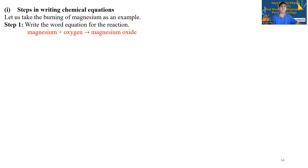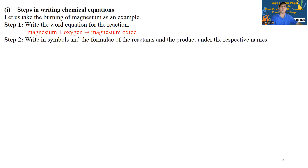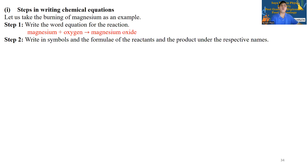The reaction of magnesium with oxygen produces magnesium oxide. Now write the symbols and formulae of the reactants and products under their respective names. We can construct the elements of the balanced equation. Magnesium reacts with oxygen to produce magnesium oxide.